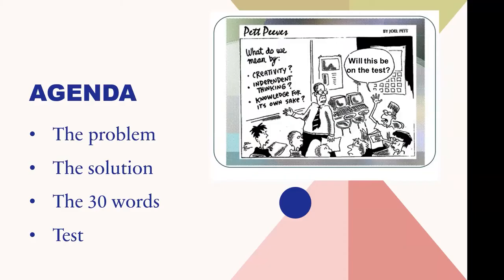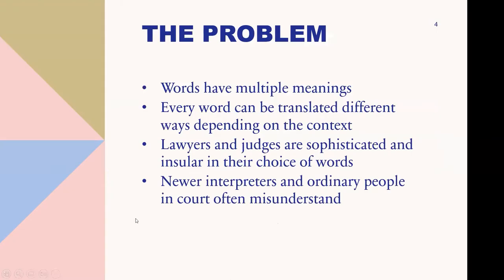The agenda today: we're going to talk about the problem of words that are used in special ways, the solution, and then go over each of the 30 words in turn with example sentences showing the different meanings. At the end, there's a test — don't worry, it's not graded. It's more of a group review to see if everybody learned each of the words. The problem is that words in general have multiple meanings, and every word can be translated different ways. Lawyers and judges use words in special ways that regular people don't.